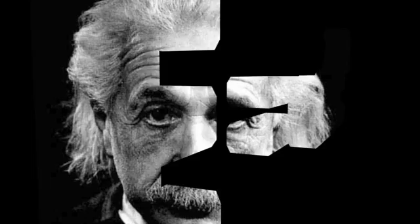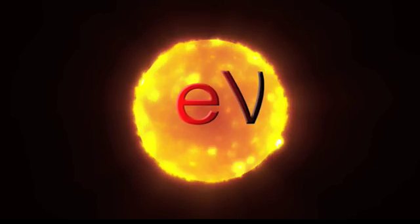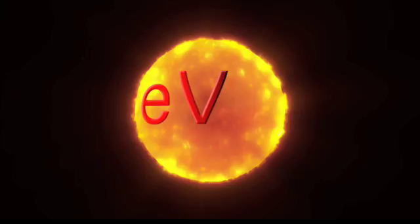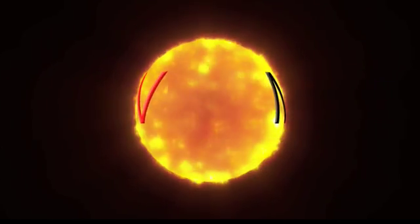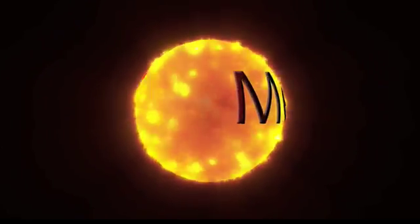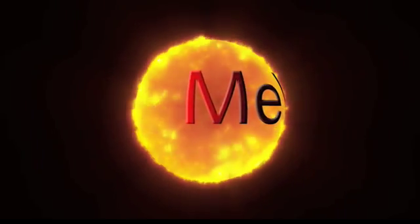Ever since Einstein demonstrated the equivalence of mass and energy, physicists often give the rest mass of tiny particles like protons, neutrons, and electrons in units of energy. Two convenient energy units are the electron volt, or eV, and its cousin, million electron volts, or MeV.